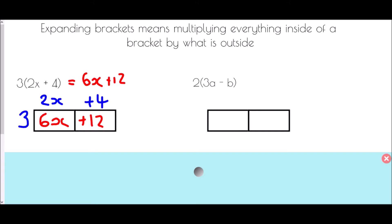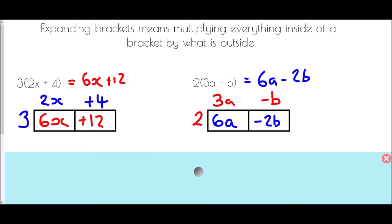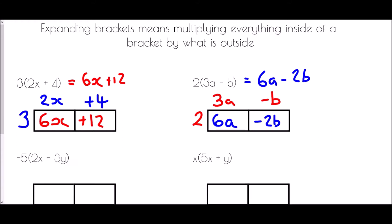The next one is 2 being multiplied by 3a minus b. I place 2 at the front, 3a at the top, and negative b at the top. Then: 2 times 3a is 6a, and 2 times negative b is negative 2b. So the solution is 6a - 2b.